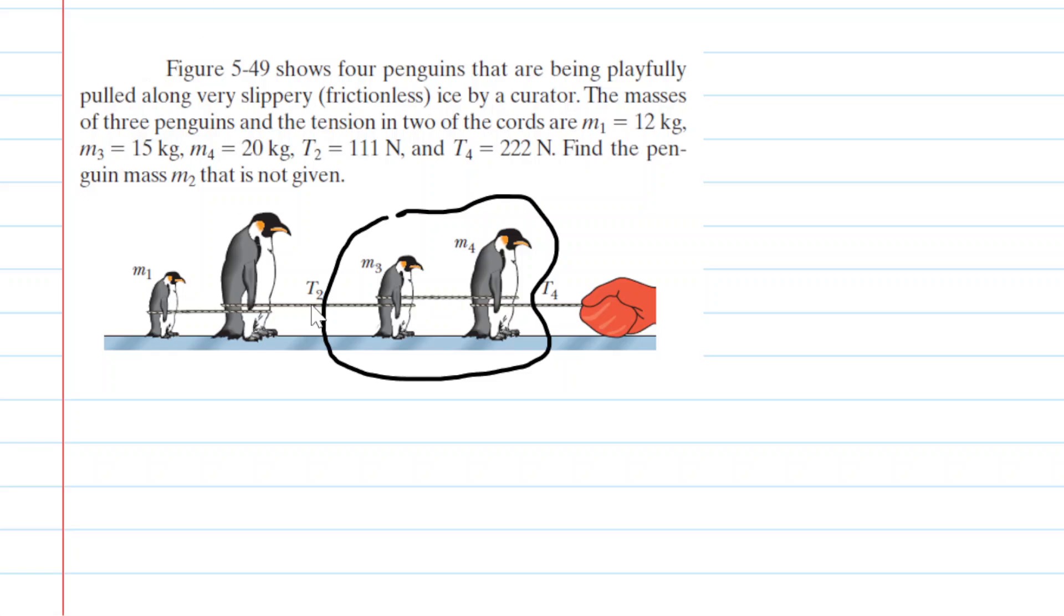Now, this system can be represented as a box again. And if you look carefully, we have two tensions this time acting on the system. We have T4 as well as T2. T4 is sort of tugging the system to the right, so we'll mark that accordingly. And then T2 would be pulling back on the system to the left. So this would be T2 right here. And then the mass of our object would just be m3 plus m4.